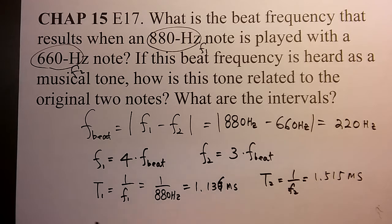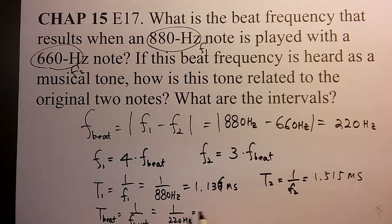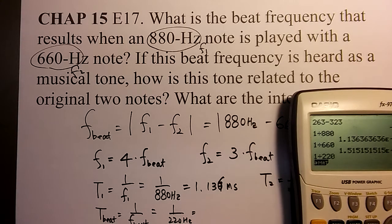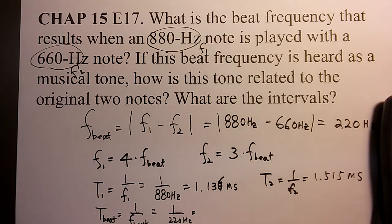As time and then interval, the period of beat becoming 1 over F beat, which is 1 over 220Hz. Then 1 divided by 220, then 4.545 milliseconds.